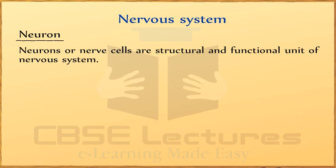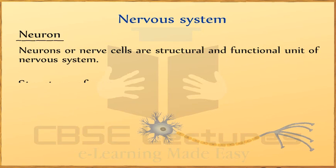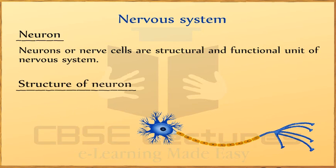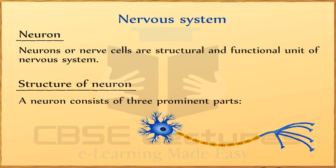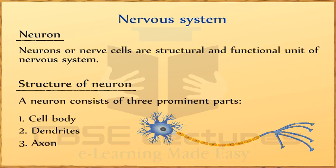Neuron or nerve cell is the structural and functional unit of the nervous system. Do neurons have parts? Yes, a neuron consists of three prominent parts: first, cell body; second, dendrites; third, axon.